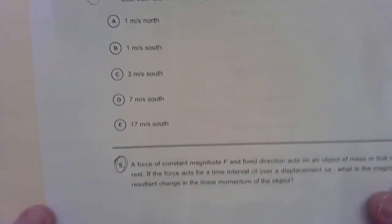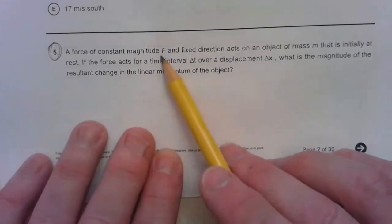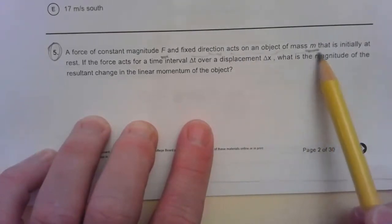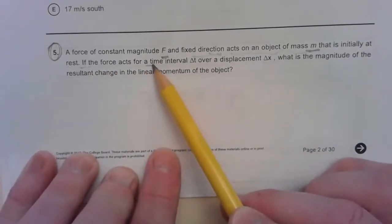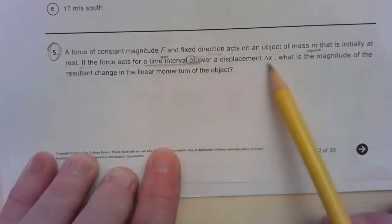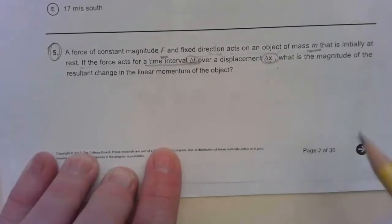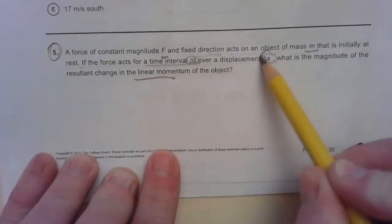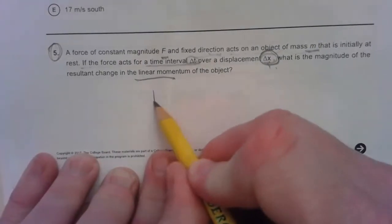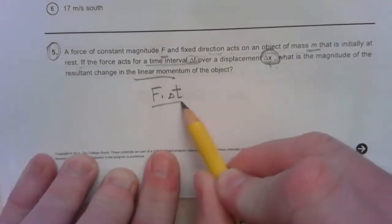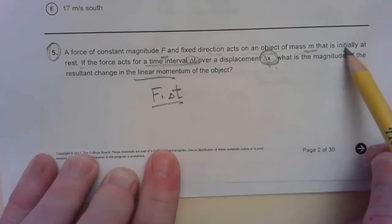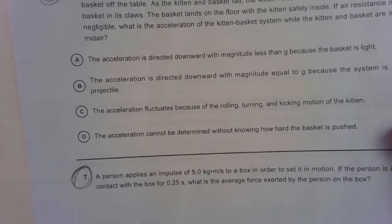All right. Number five. Also at the bottom here. A force of constant magnitude F and fixed direction acts on an object of mass M that is initially at rest. If the force acts for a time interval of delta T, so we've got impulse here, right? Force and time over a displacement of X. That's work. If we do force and displacement is work. What is the magnitude of the resultant change in the linear momentum of the object? So change in linear momentum is impulse. The displacement is not necessary. You have force times time is impulse. It is the change. Period. End of story. It doesn't even matter if the object's initially at rest. The resultant change is going to be that. Let's go see if we are correct. That is number five. It's A, yes.